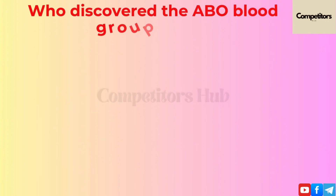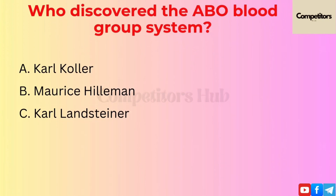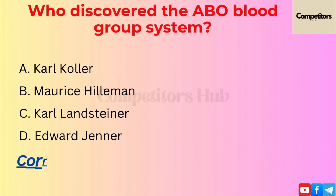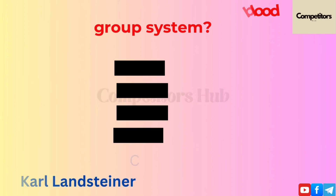The next question is: who discovered the ABO blood group system? Option A: Carl Koller. Option B: Maurice Hilleman. Option C: Karl Landsteiner. Option D: Edward Jenner. The correct option is C, Karl Landsteiner.